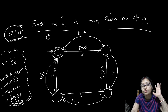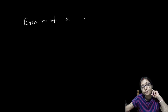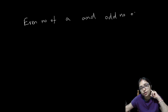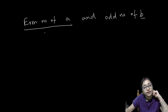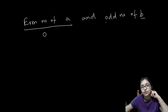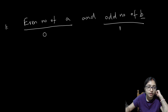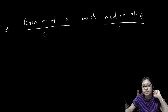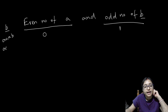Just watch till the end — after that I will give you a short trick on how to change the final state, so within one minute you can solve all the questions. First clear your concept. Next one: even number of A and odd number of B. Even number of A means remainder is 0. Odd number of B means it starts with 1. What is the minimum length string? At least one B should be there.